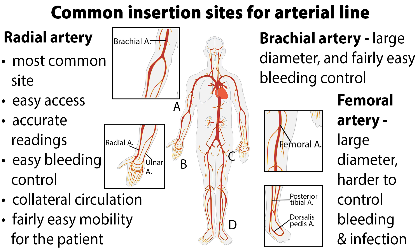Common insertion sites include the radial, brachial, and femoral arteries. The radial artery is the most common site; its advantages include easy access, accurate readings, easy bleeding control, collateral circulation, and fairly easy mobility for the patient. The disadvantages are the small diameter making it difficult to insert, and possible nerve damage or thrombosis. The advantages of the brachial artery include large diameter making it easier to insert and fairly easy bleeding control. The disadvantages include immobilization of the limb, thrombosis, and limited collateral circulation.